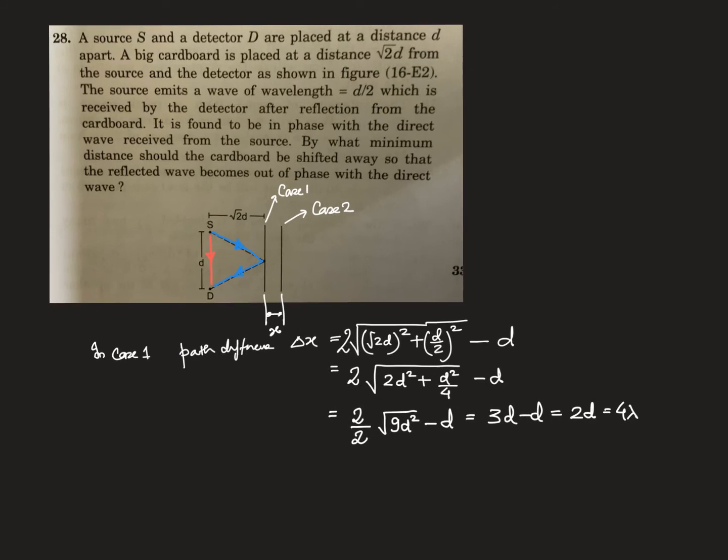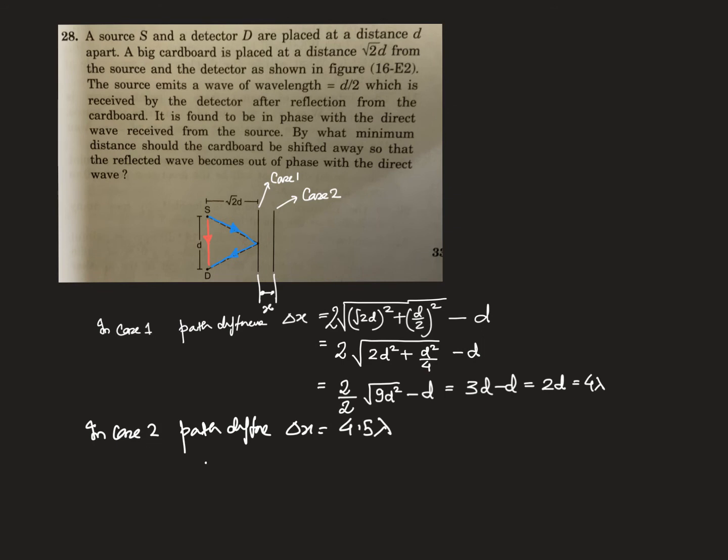So in the first case, the path difference is equal to 4 times lambda. Now, in Case 2, the path difference should be equal to 4.5 times lambda because there should be a minima. Out of phase means minima. That means 2 times root over root (2d + x)² plus (d/2)² minus d equals 4.5 times lambda.